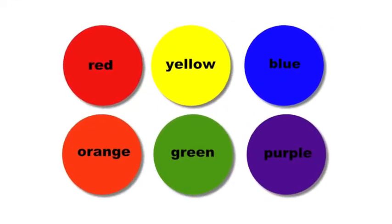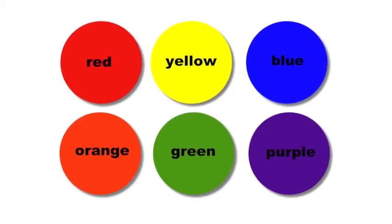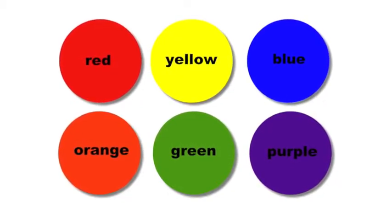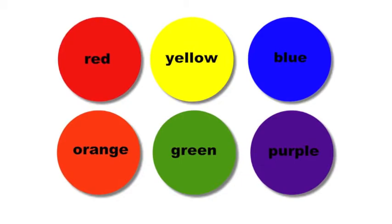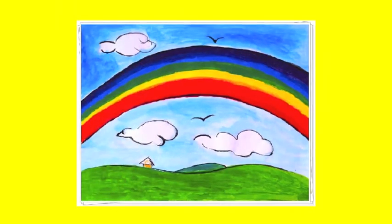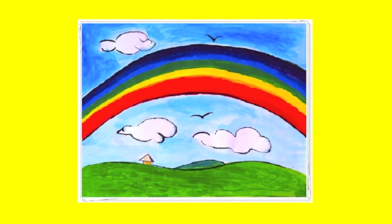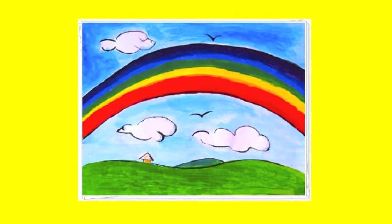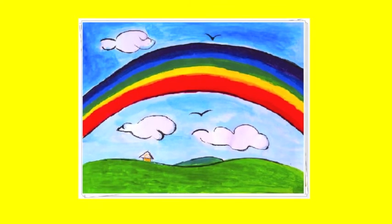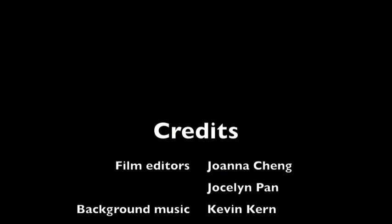When we add the primary colors of red, yellow and blue, mixing this will give us the secondary colors, which are orange, green and purple. So we can use these 6 colors to draw a picture.